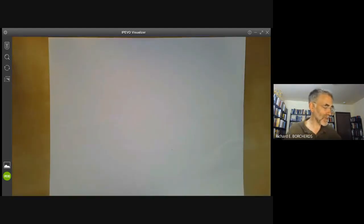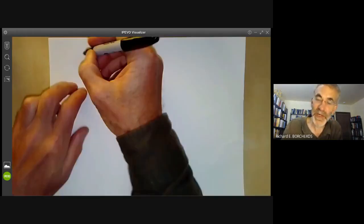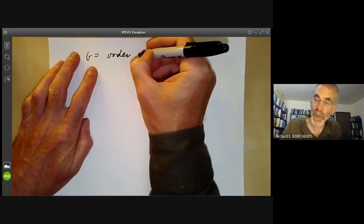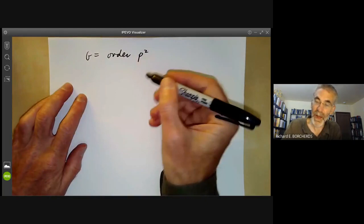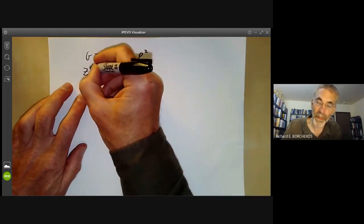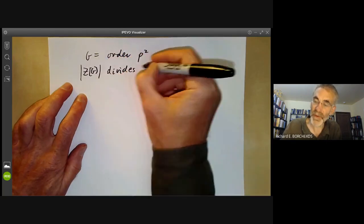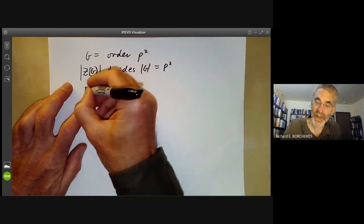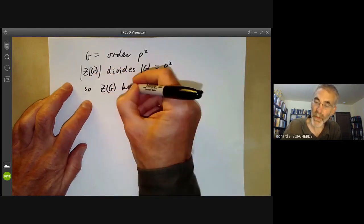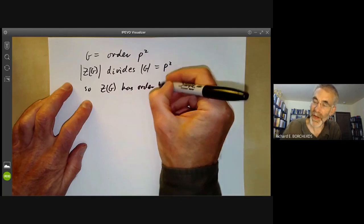So we've got these two results, one which says the centre of a P group is non-trivial. A P group is just a group of order of power of P. And the other says the quotient of a group by the centre can't be a non-trivial cyclic group. So now let's take G to be of order P squared or three squared, if you prefer. And look at the order of the centre of G. The centre, the order of the centre of G divides the order of G, which is P squared. So the centre of G has order one P or P squared.